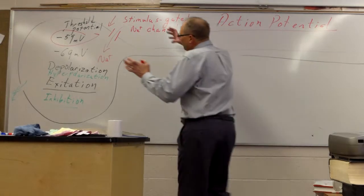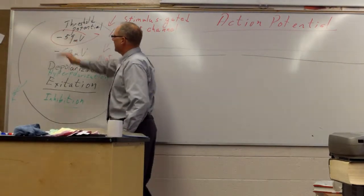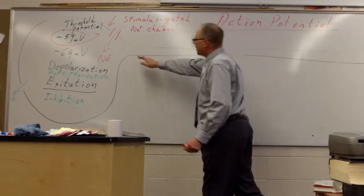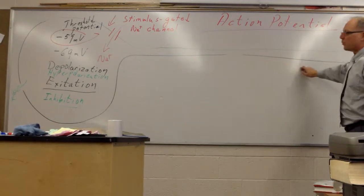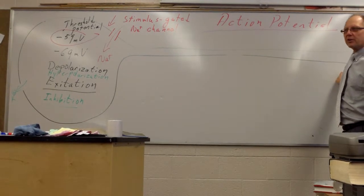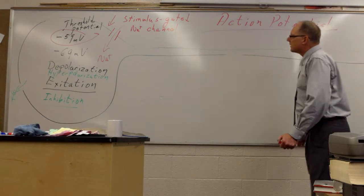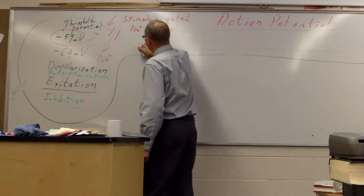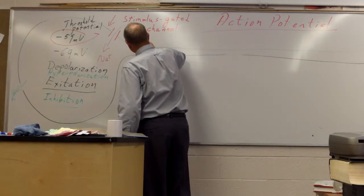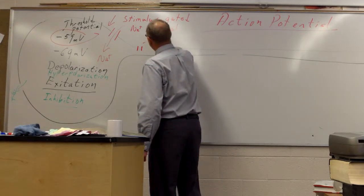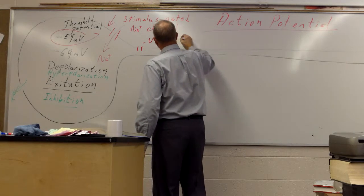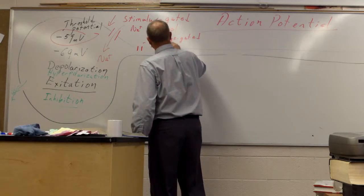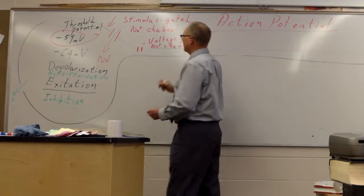So when the local potentials cause a depolarization to negative 59 millivolts, that's called the threshold potential. That triggers a response in the axon, which causes an action potential or a nerve impulse to occur. So what exactly does that stimulate? Well when negative 59 millivolts is achieved, that stimulates the voltage gated sodium ion channels to open up.